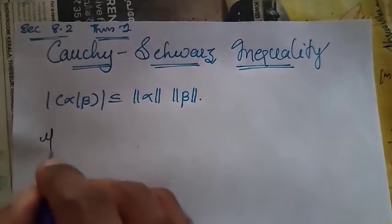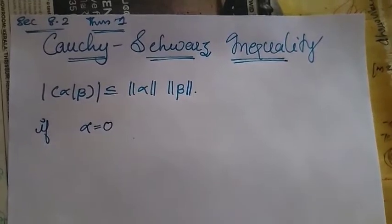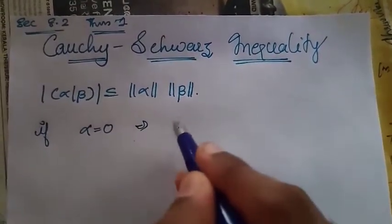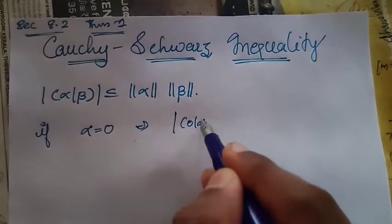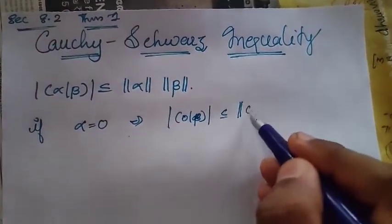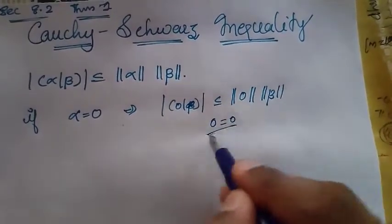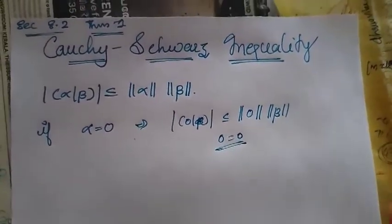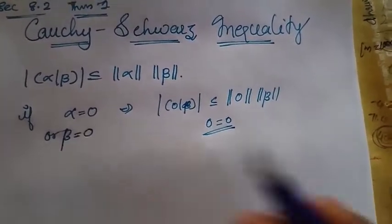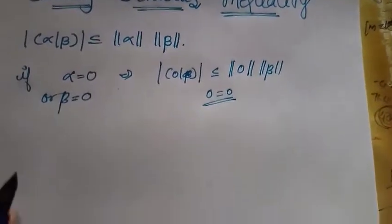Suppose alpha equals zero. Then |⟨0, β⟩| is less than or equal to ‖0‖·‖β‖, which gives 0 = 0. So when alpha equals zero or beta equals zero, the inequality holds trivially.